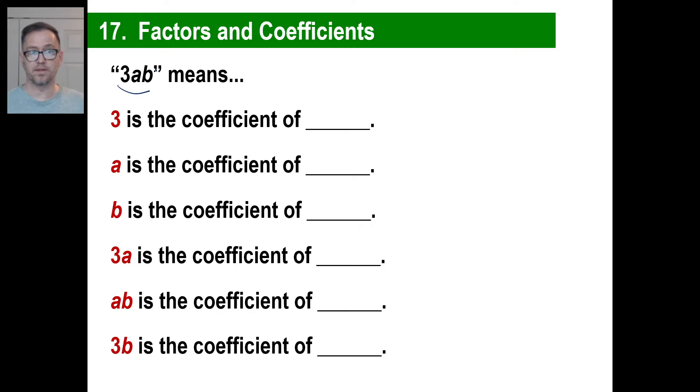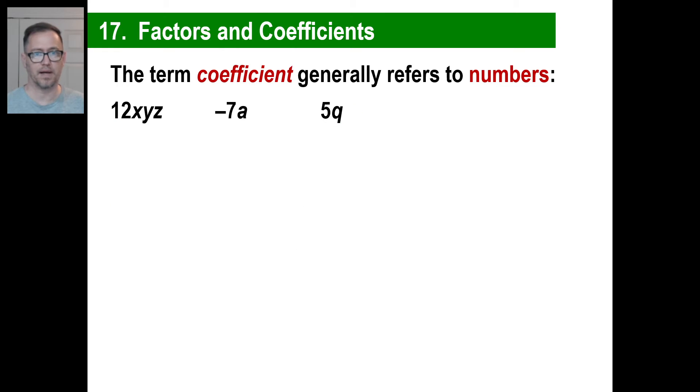If there's nothing between 3 and the a, nothing between the a and the b, like a plus sign or a minus sign, we know we're multiplying. So we would say 3 is the coefficient of a and b, a is the coefficient of 3 and b, b is the coefficient of 3 and a, and so on, just like right down the line.